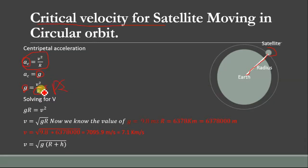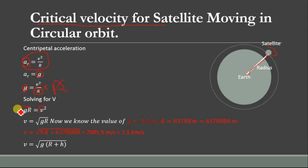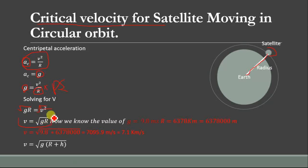Solving this equation for V: multiplying both sides by R, we get G·R = V². Now taking the square root of both sides, the square cancels and we get V = √(G·R). This is the equation for the critical velocity of a satellite.